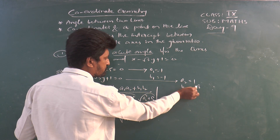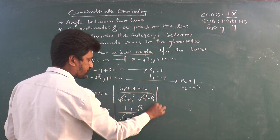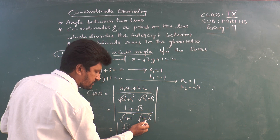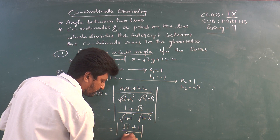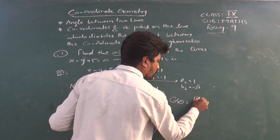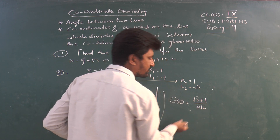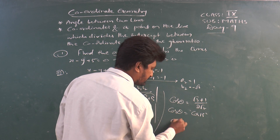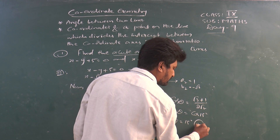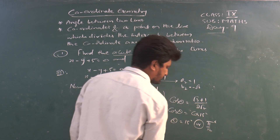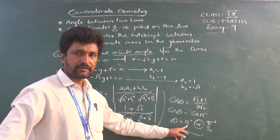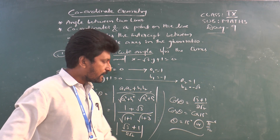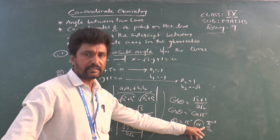So cos θ = (√3 + 1) / (2√2), which equals cos 15°. Therefore θ = 15°, or equivalently π/12 radians. This is the acute angle between the given two lines. The other angle between them is 180° − 15° = 165°, or in radians π − π/12 = 11π/12.